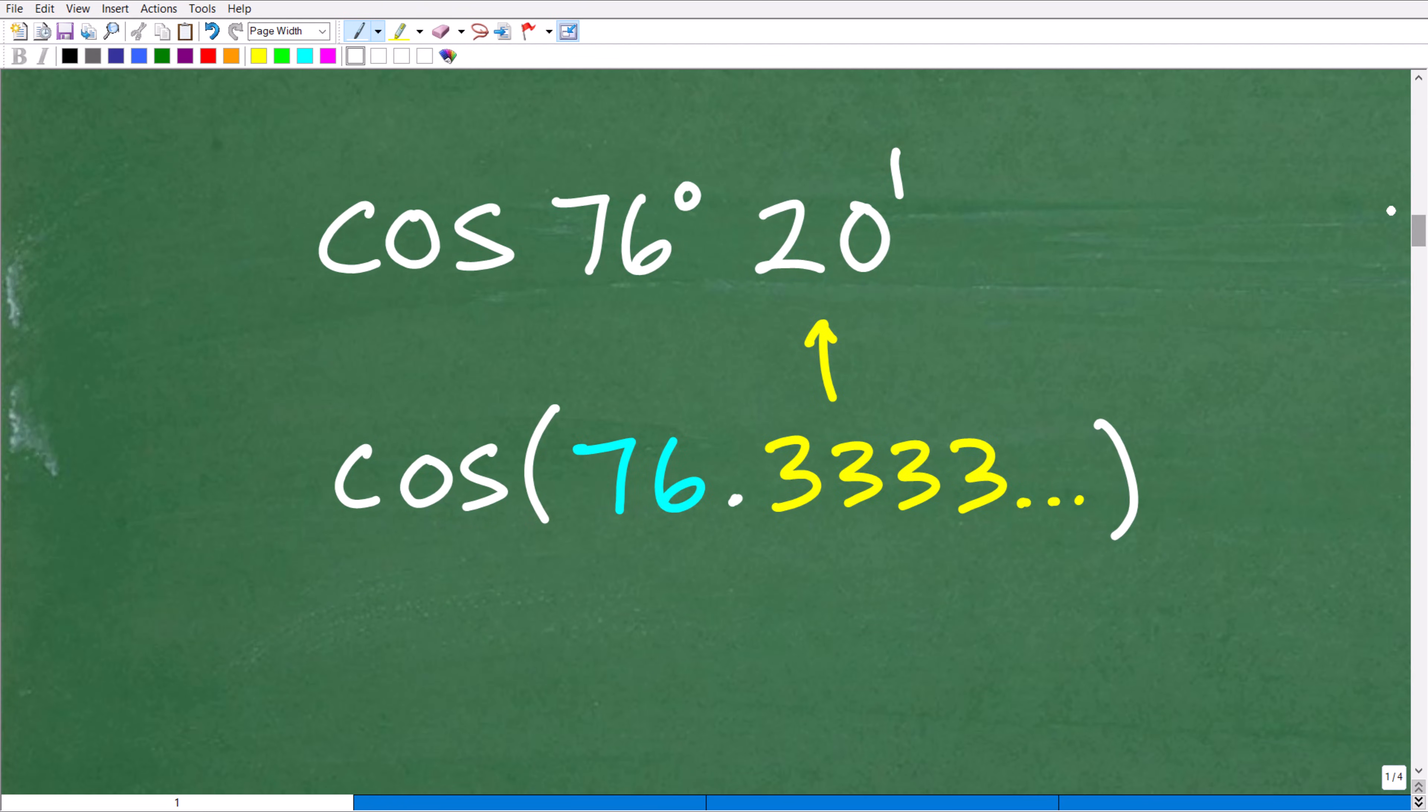So this is what we need to do now. So instead of putting this into our calculator, 76 degrees and 20 minutes, we're going to replace this part with the degree measurement of 0.33 repeating. So you just don't want to use one 3 because this is 0.3 repeating. Use as many 3s as possible. Just type in as many as you can. And when you do that, you'll get your answer.